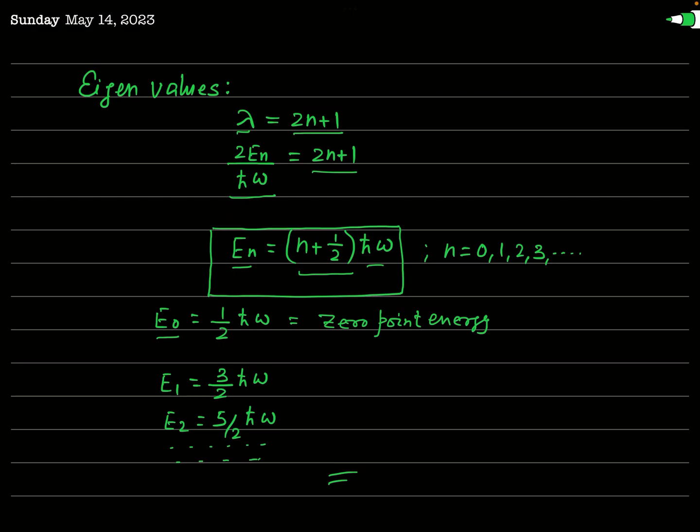Even at absolute zero temperature the vibration does not stop — this is why ½ℏω is called the zero-point energy. The next values are E₁ = (3/2)ℏω and E₂ = (5/2)ℏω. The energy eigenvalues of the linear harmonic oscillator are not continuous but discrete. This discrete energy spectrum is a quantum mechanical feature of the oscillator. All energy levels are equally spaced: subtracting any consecutive levels gives the same spacing of ℏω.